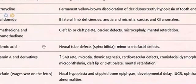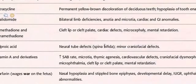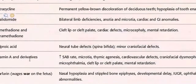Valproic acid: neural tube defects — which is important for exams — specifically spina bifida. Minor craniofacial defects. Vitamin A and its derivatives: spontaneous abortion.